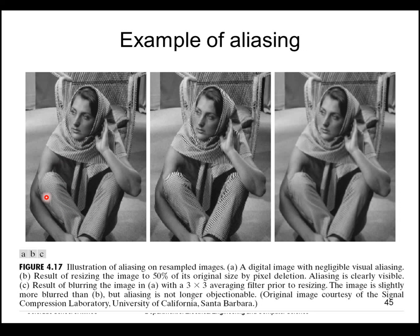We can avoid that by limiting the frequency of the original image. Namely, we blur this original image to reduce its maximum frequency. And then our sampling rate is okay, so that we can reconstruct it without introducing aliasing.